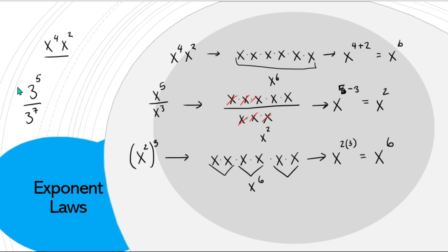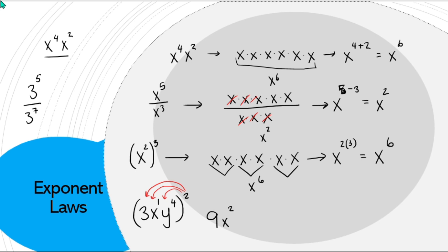We can apply this to a lot of different situations. Say I had (3xy⁴)² — we distribute the exponent to everything within the brackets. Be careful: 3 squared is 9, not 6. Numbers always behave as they should. A plain x is x to the power of 1, so 1 times 2 gives x². And y⁴ squared becomes y⁸.